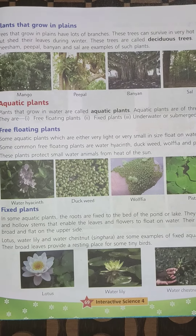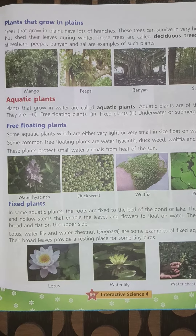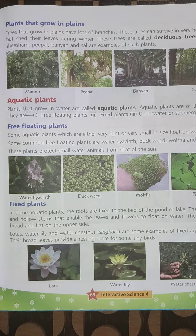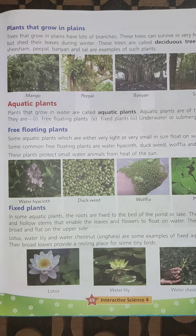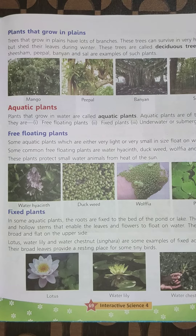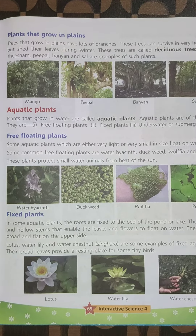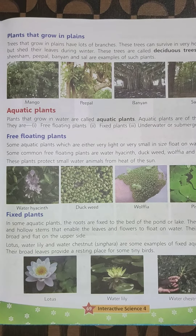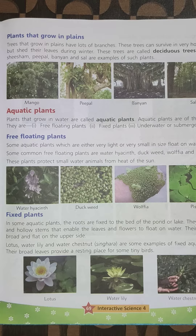Fixed plants: in some aquatic plants, the roots are fixed to the bed of the pond or lake. They have light and hollow stems that enable the leaves and flowers to float on water. Their leaves are broad and flat on the upper side.